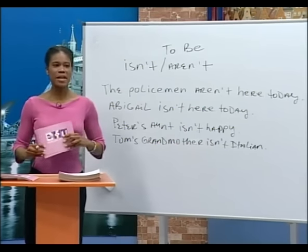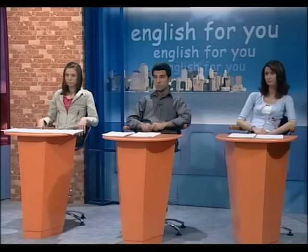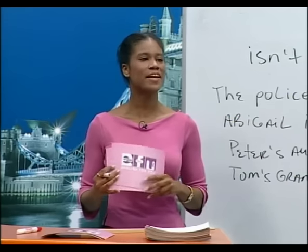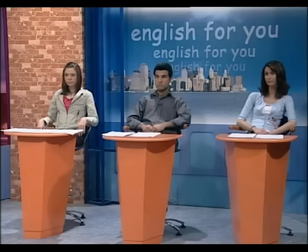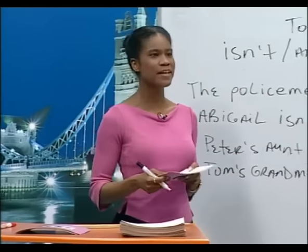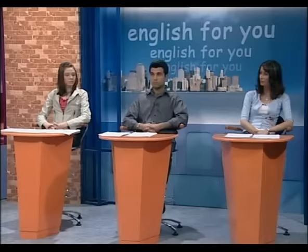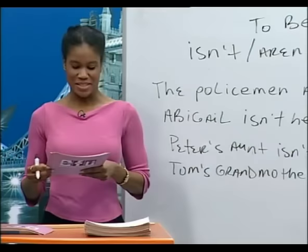Let's practice the negative forms of the verb 'to be'. Anna, is Silvia your sister? No, she isn't. She is my new friend. Very good. Silvia, are you Spanish? No, I'm not. I'm Bosnian. Silvia, are Alberto and Anna your parents? No, of course they are not. Now you ask the questions. Teacher, are you American? Yes, I am. Silvia, are you happy today? Yes, I am. Anna, are you hungry? Yes, I am. Okay, let's have lunch. Later, we have work to do. Great job, everyone.